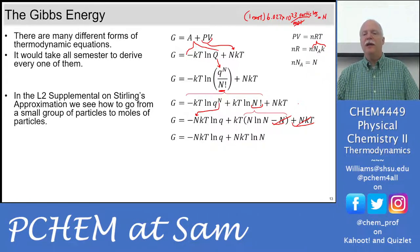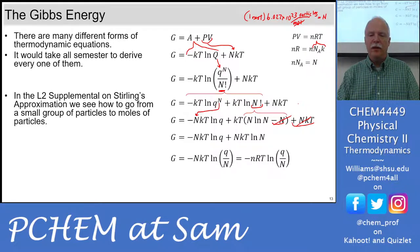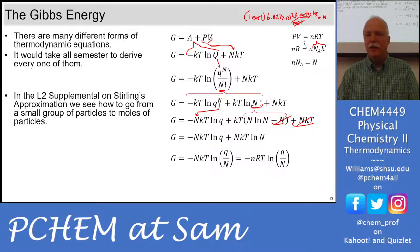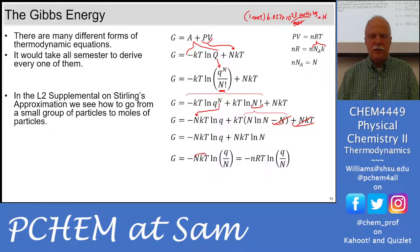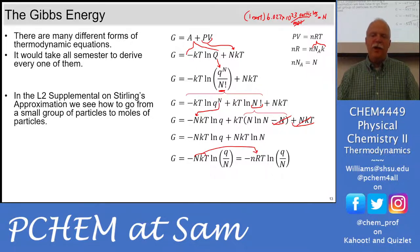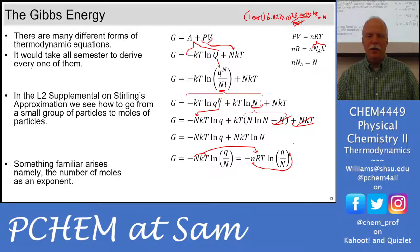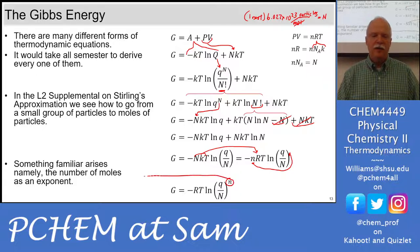After applying Stirling's approximation, we've gotten rid of the factorial, so we can now calculate things for molar quantities of particles. We can then combine the logs to make it a fraction again — we have Q over N, with NkT out front, which is also NRT. It's a property of logs that a coefficient can be moved to become a superscript, and so something familiar arises: the number of moles as an exponent.